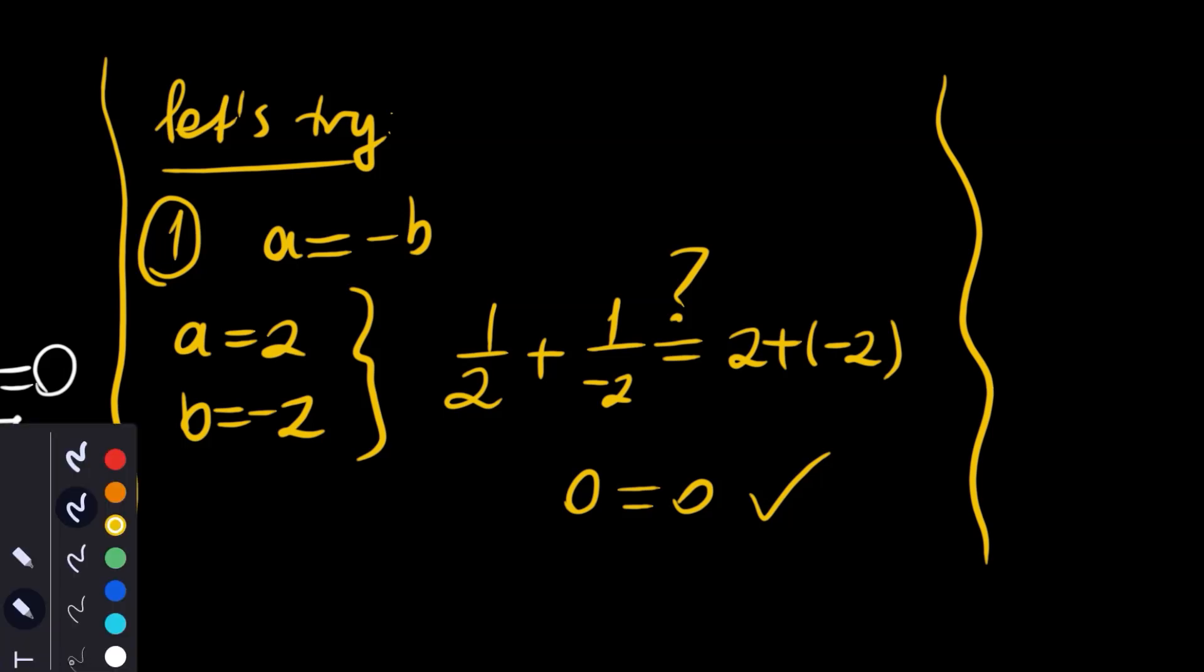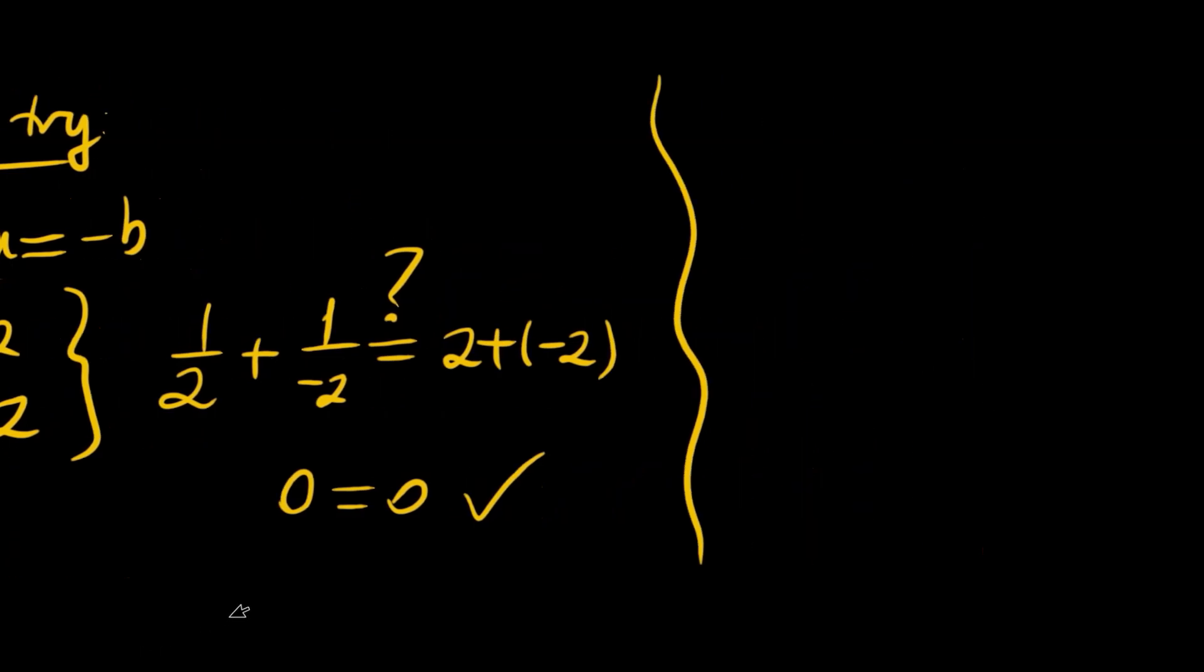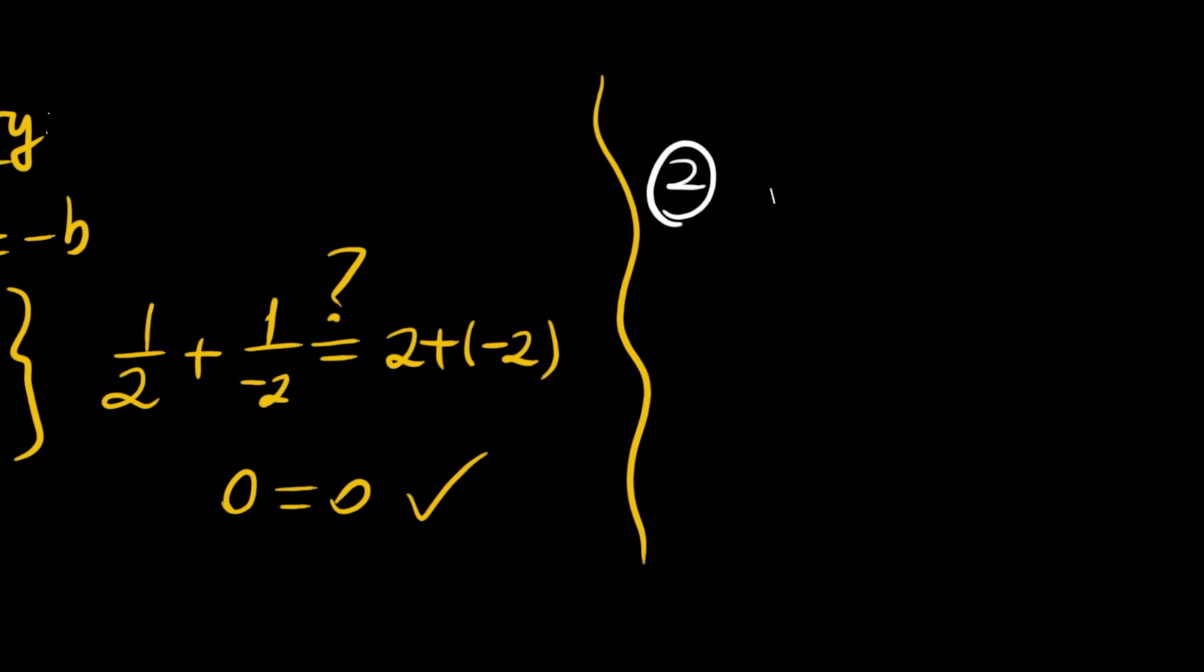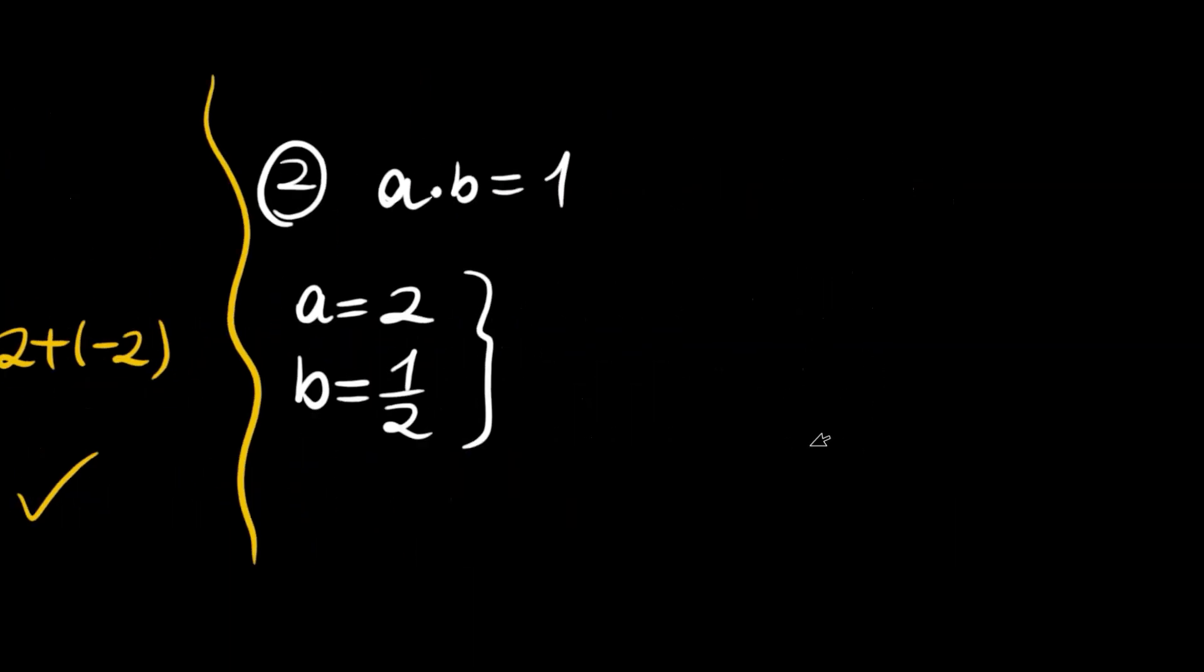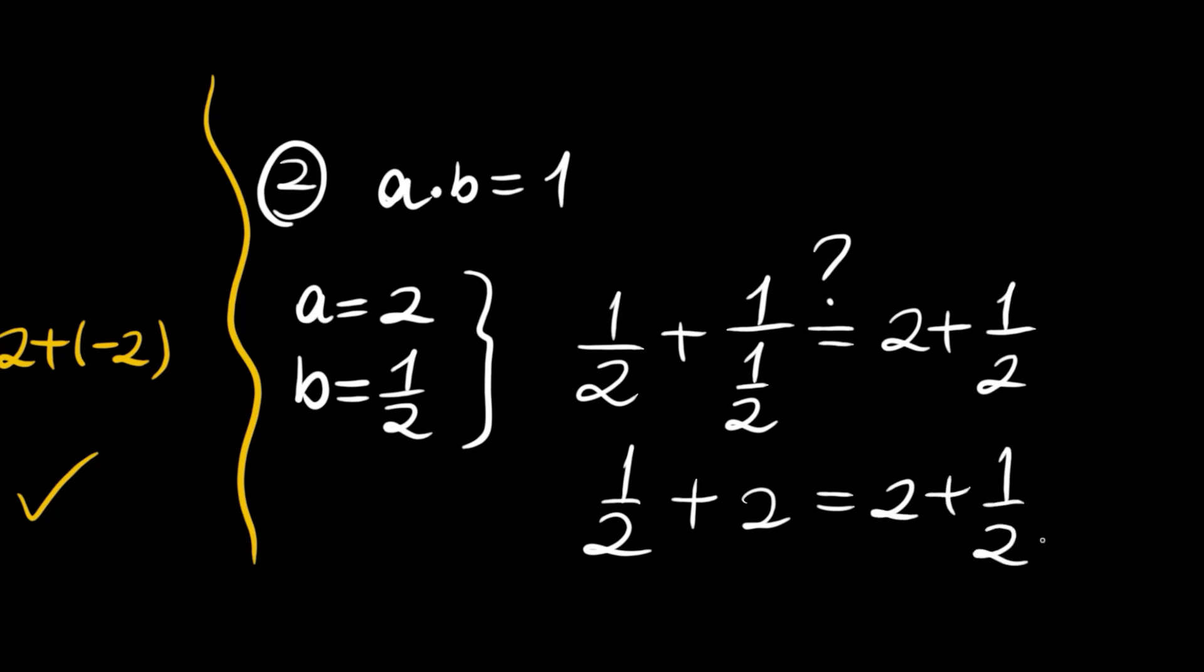For the other result we have ab is equal to 1. Say a is equal to 2 and b is equal to 1 half. Then 1 over a is 1 half, 1 over b is 1 over 1 half, and this is equal to a plus b, 2 plus 1 half. This second one becomes 2 and the first one is 1 half, so we have equal sides.